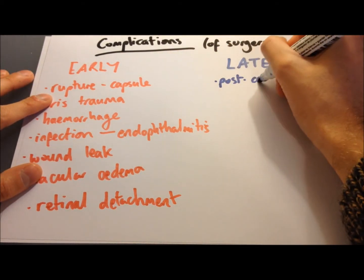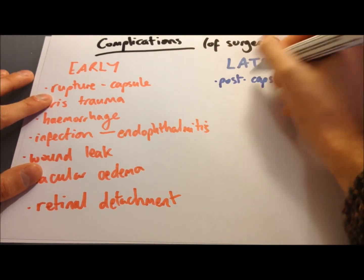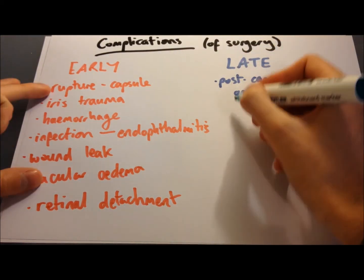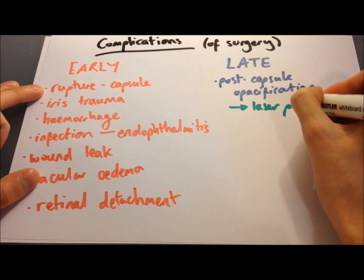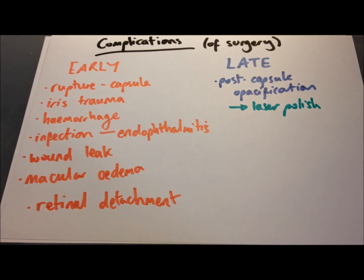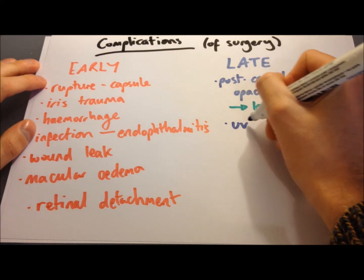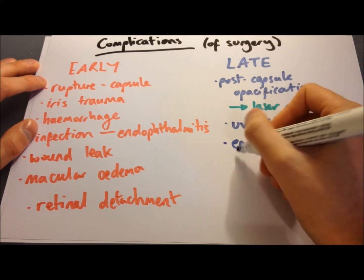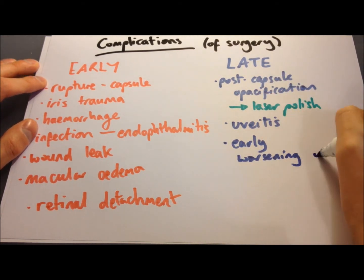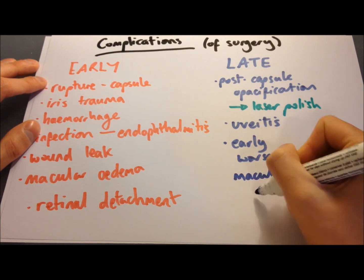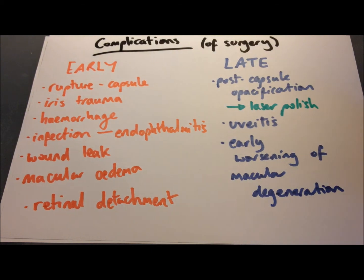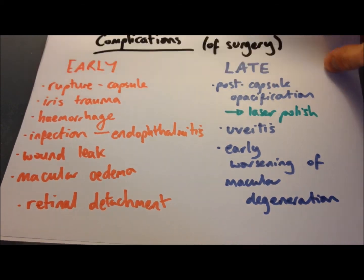Late complications include opacification of the posterior capsule, occurring in about 20% of people — though it can be treated by polishing the capsule with a laser. Uveitis is another late complication. With regard to macular degeneration, surgery doesn't make you more likely to develop it, but in patients already predisposed to it, surgery can cause it to worsen earlier.